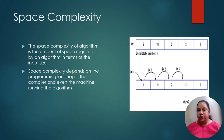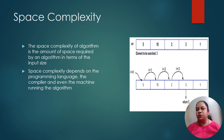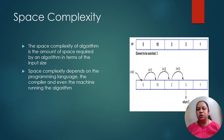Now let us understand the space complexity. If you see the diagram on the right-hand side, we see an array. Array is a continuous set of memory locations of the same type. We have stored 5 elements in this array — 1, 2, 3, 4, and 5. The amount of space required to store the data is the space complexity.